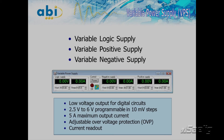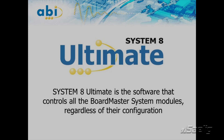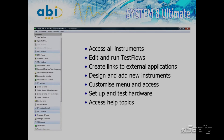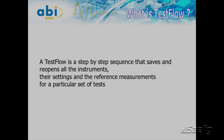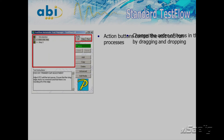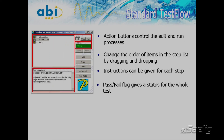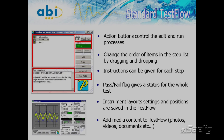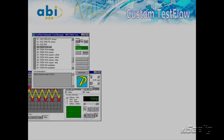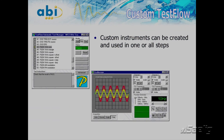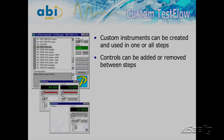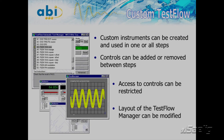All modules are controlled by the System 8 Ultimate software. At the heart of System 8 Ultimate is the concept of test flow. Test flow is an approach to testing and fault finding that not only speeds up the operation but also allows the system to be used by semi-skilled operators. It transforms the fault-finding process into a step-by-step procedure that reduces the risk of inaccurate measurements by recording all the parameters of the test. Technicians can write a test procedure or test flow for a particular PCB by setting up each stage of the process and recording the results.